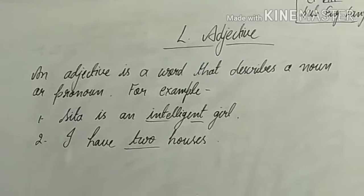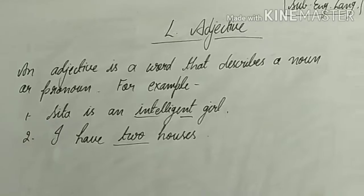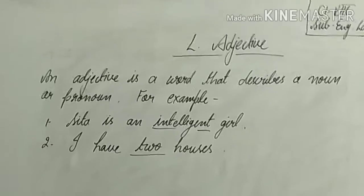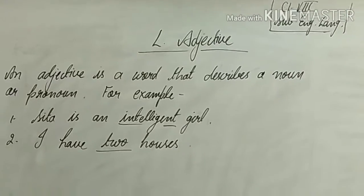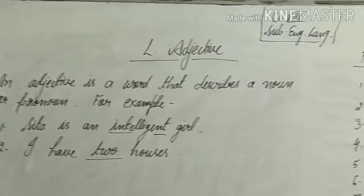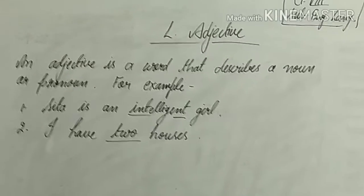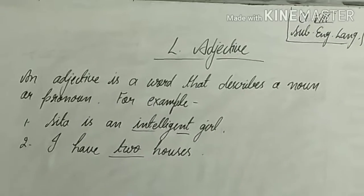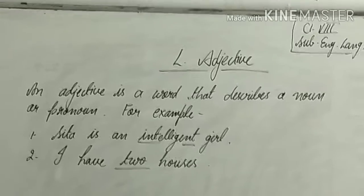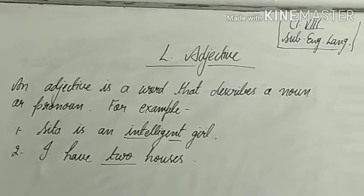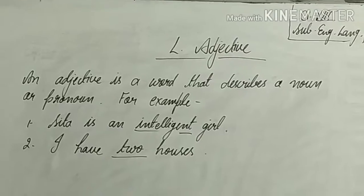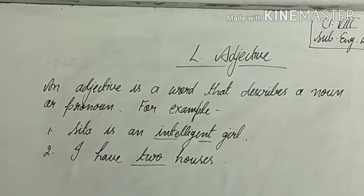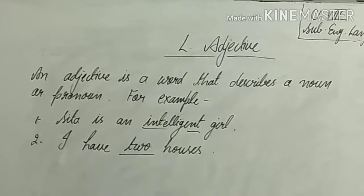For example, 'Sita is an intelligent girl.' Here the nouns are Sita and girl — they refer to the same person. Intelligent is saying something more about Sita. In place of intelligent you can write any adjective: Sita is a tall girl, a smart girl, a very beautiful girl, a very short girl, a very ugly girl. All these words say something more about Sita.